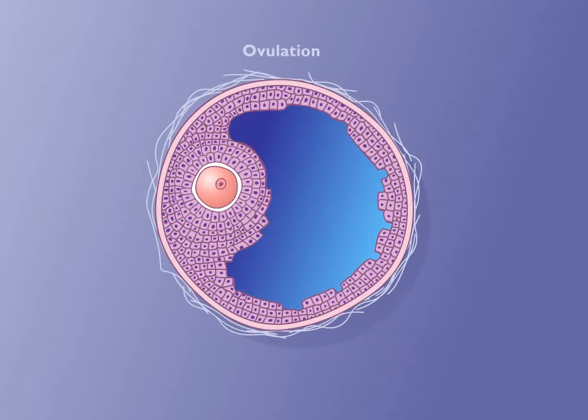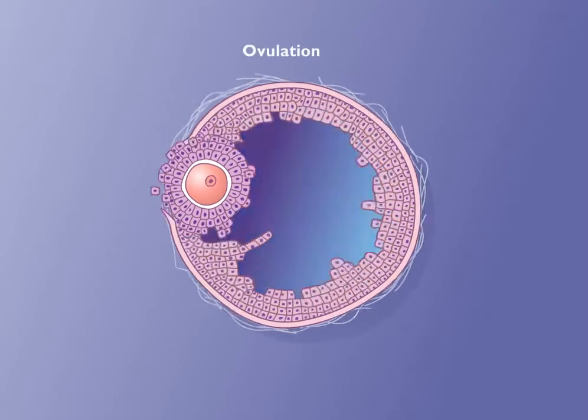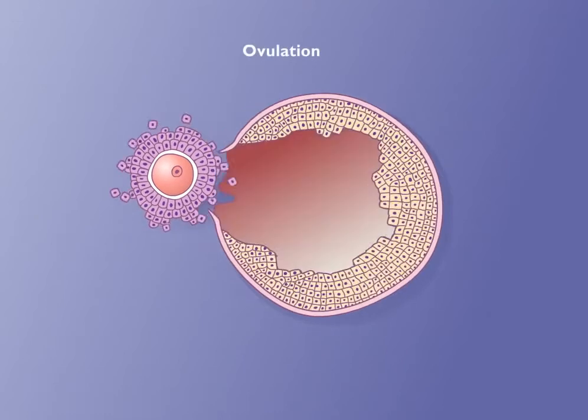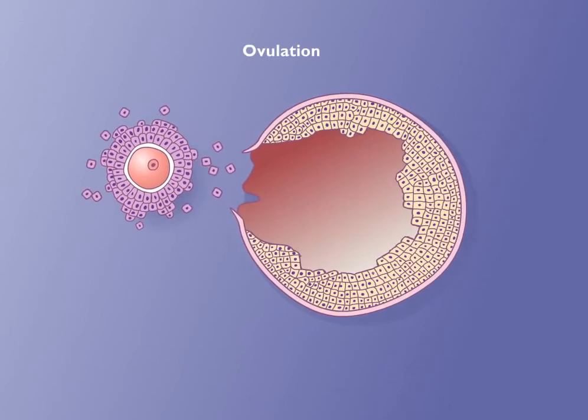During ovulation, the oocyte is released from the follicle along with some surrounding granulosa cells of the cumulus mass called the corona radiata.